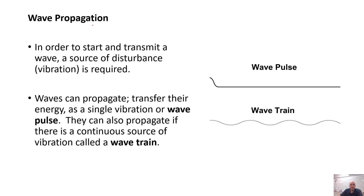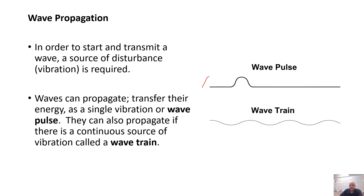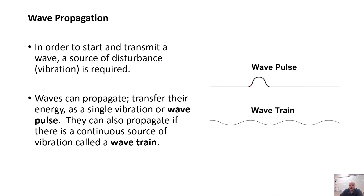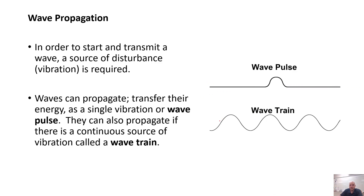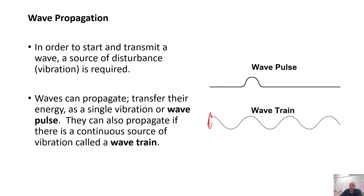When you hear the term wave propagation, it's just how waves are being sent. A wave pulse is just a single wave traveling. Whereas a wave train — if you were just vibrating a string up and down — the end result would be a wave train, which is a continuous wave.